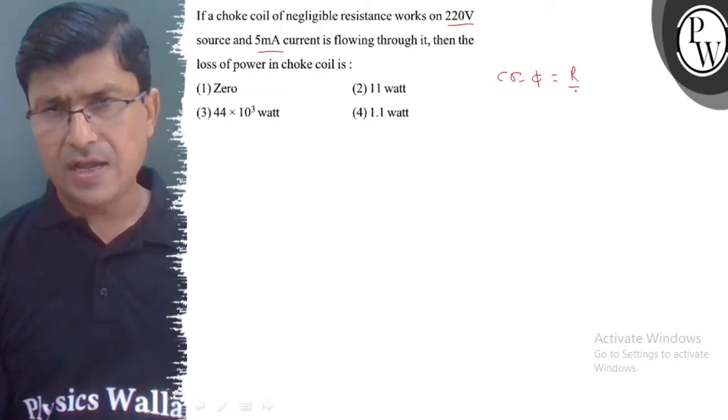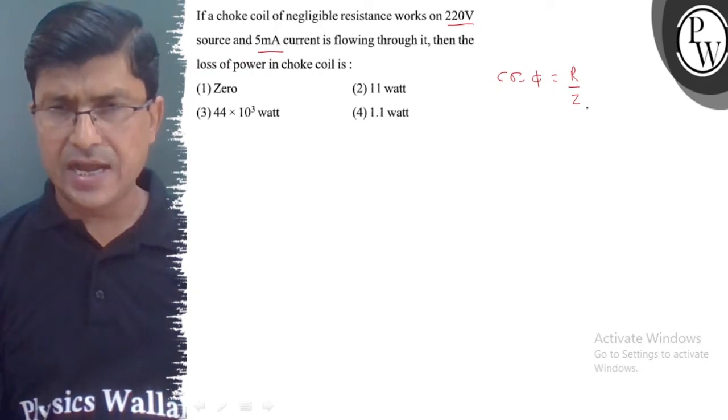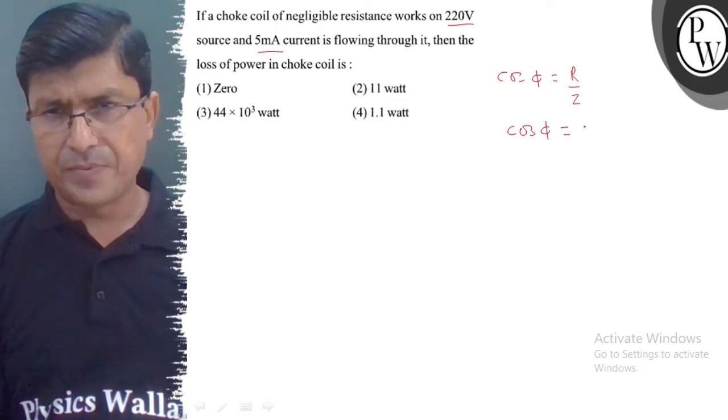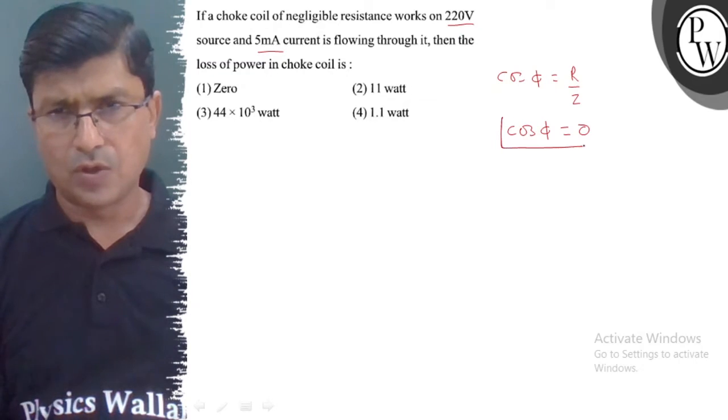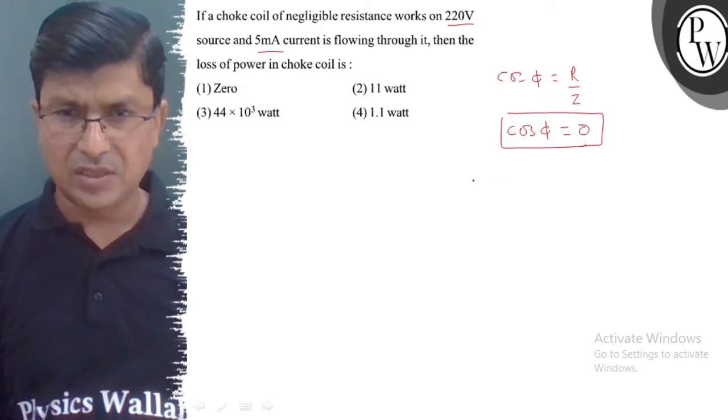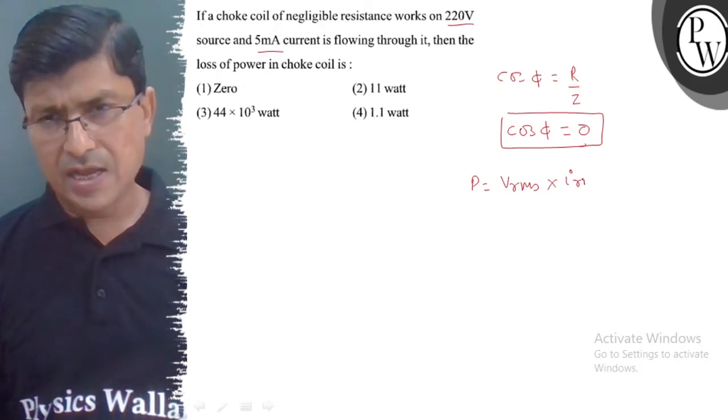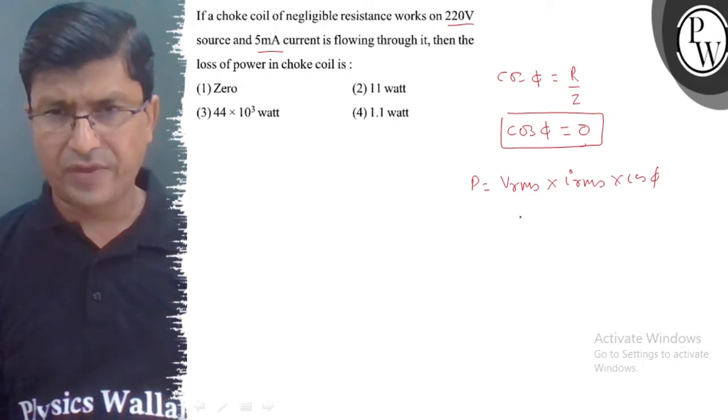If we get the value of cos phi, then cos phi is equal to R/Z. If we talk about power, then power equals Vrms into Irms into cos phi. If we get the value of cos phi, then the value of power is equal to 0.